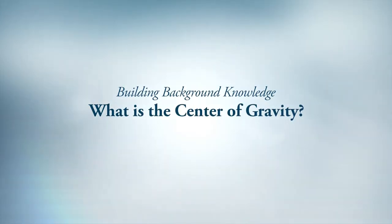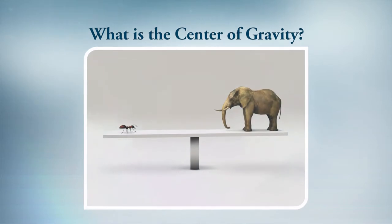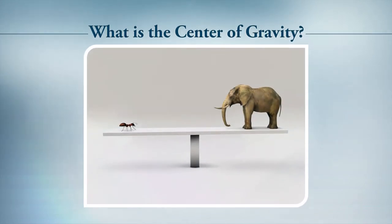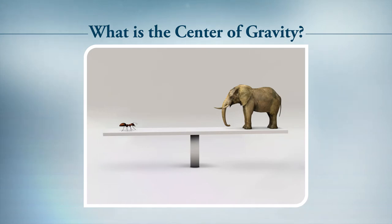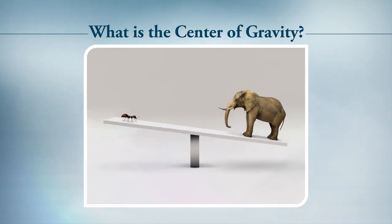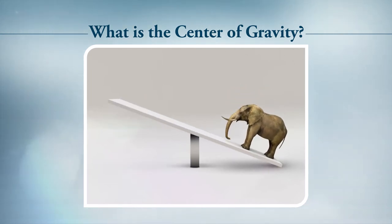So what is Center of Gravity? Well, if you've ever played on a seesaw or supervised your students on one, then you and they have experienced its effects. Gravity results in all objects falling to the ground. But if you place two items on either side of a seesaw, like the ant and the elephant in this animation, what happens? That's right — only one item, the elephant, falls to the ground while the ant goes flying into the air.